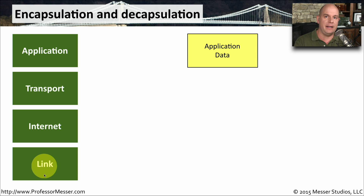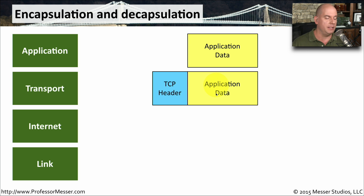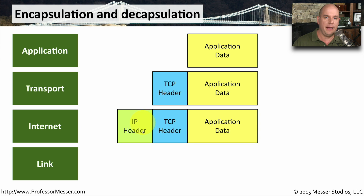We're trying to get data from your device and your applications out to the network and to another device. We start with the application data, but that can't go over the network by itself. As we send it down to the transport layer, the transport layer adds its own header — it encapsulates your application data within a TCP header. We then go to the internet layer where an IP header is now added, so we've encapsulated this into IP header information.